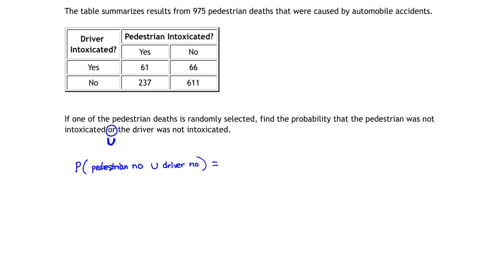Now, how do I get that probability? How do I get the probability that I select an element from that union? I have to count the number of elements in that union, and then divide that total by the total number of possible pedestrian deaths. That's what's going to give me my probability. The total number of pedestrian deaths is 975 — that's my denominator.